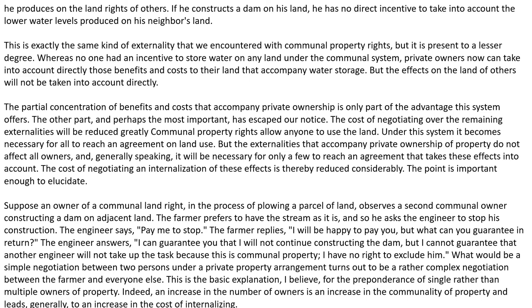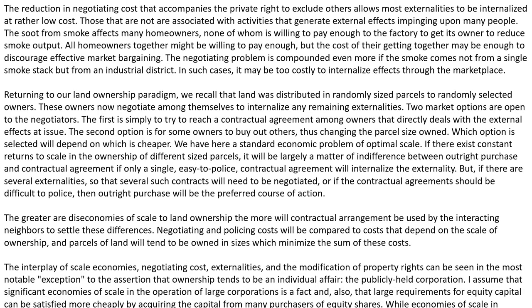Indeed, an increase in the number of owners is an increase in the commonality of property and leads generally to an increase in the cost of internalizing. The reduction in negotiating costs that accompanies the private right to exclude others allows most externalities to be internalized at a rather low cost — those that are not associated with activities that generate external effects impinging upon many people. The soot from smoke affects many house owners, none of whom is willing to pay enough to the factory to get its owner to reduce smoke output. All homeowners together might be willing to pay enough, but the cost of their getting together may be enough to discourage effective market bargaining. The negotiation problem is compounded even more if the smoke comes not from a single smokestack, but from an industrial district. In such a case, it may be costly to internalize effects through the marketplace.